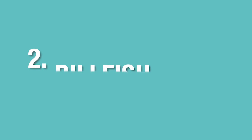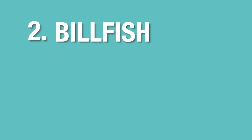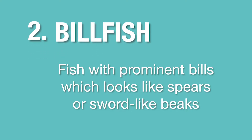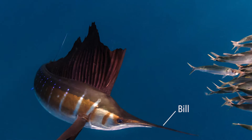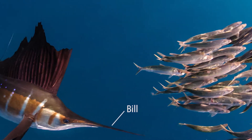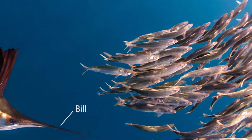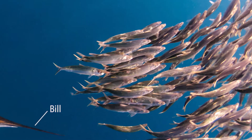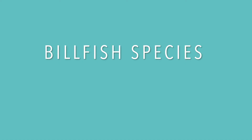Billfish refers to a group of fish with prominent bills which look like long spears or sword-like beaks. As a carnivorous group of fish, these bills are a necessity for them to slash and stun their prey.